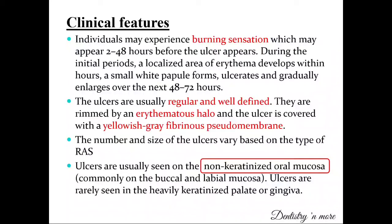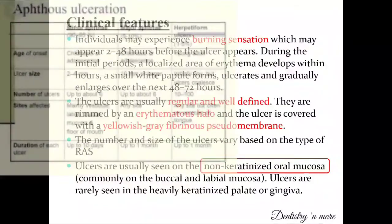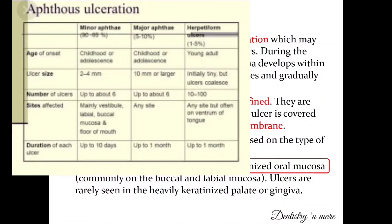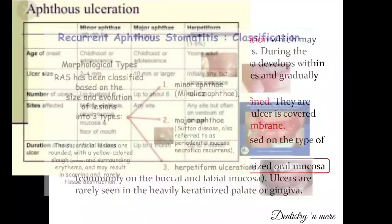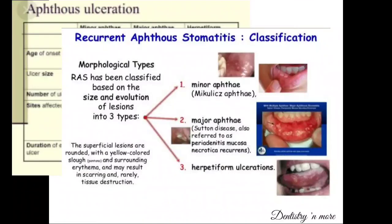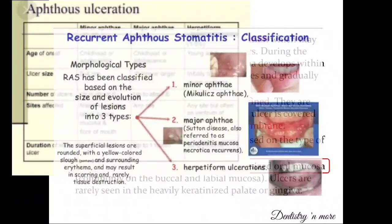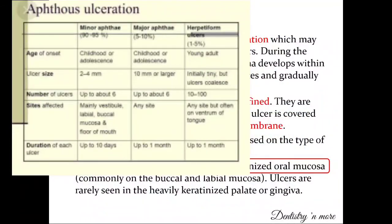The number and size of the ulcers are based on the type of recurrent aphthous ulcer. There are three types: minor aphthous ulcer, major aphthous ulcer, and herpetiform ulcers. Other names you must know: Mikulic's ulcer is the synonym for minor aphthous ulcer, and Sutton's ulcer is the other name for major aphthous ulcer. You must know the difference between all three types.